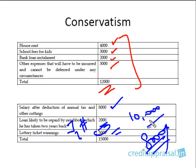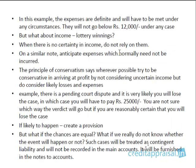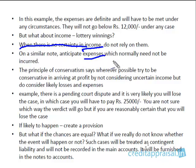The principle of conservatism says: whenever you're dealing with income, don't anticipate income which is not certain. When there is no certainty in income, do not rely on it — in fact, do not enter it in the books of accounts where it is doubtful. Similarly, when an expense is highly likely, don't hide it — anticipate that expense. This forms a core concept for many of the terms we'll discuss in the future.